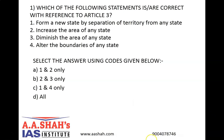Correct answer is D, all. Article 3 deals with the internal readjustment inter se of the territories of the constituent states of the Union of India. Article 3 authorizes the Parliament to: A) form a new state by separation of territory from any state or by uniting two or more states or parts of states or by uniting any territory to a part of any state; B) increase the area of any state; C) diminish the area of any state; D) alter the boundaries of any state; E) alter the name of any state.